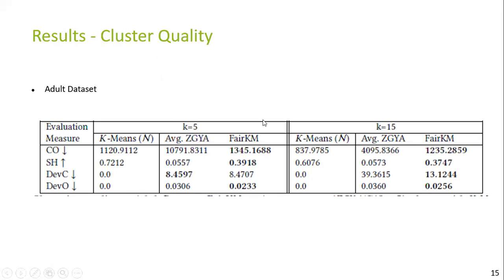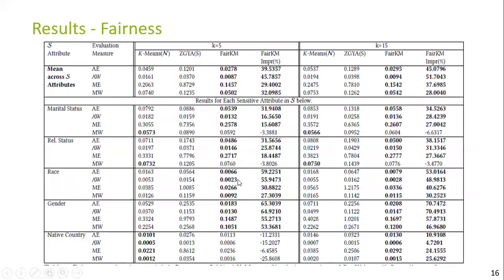Comparing cluster quality, we can see that Fair KM deviates lesser from the spline clustering compared to average ZGYA. Hence, it produces better quality clusters in terms of coherence. And with respect to fairness, we can see that the deviation measures for Fair KM clusters are much lower than ZGYA, as shown here.